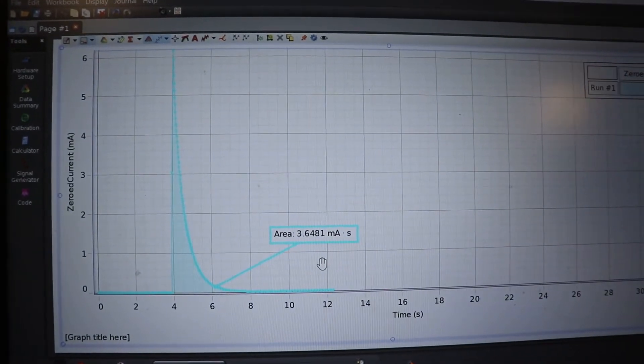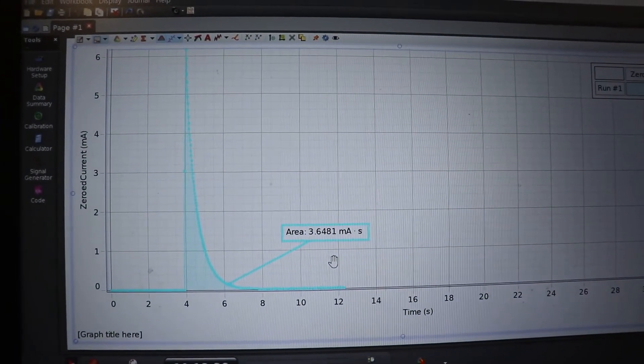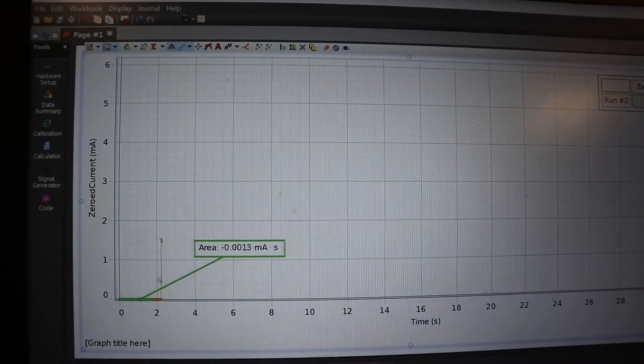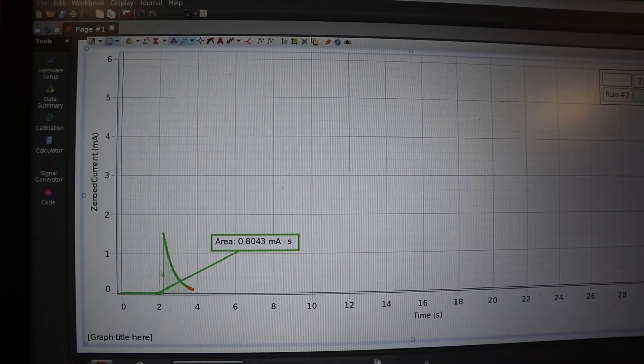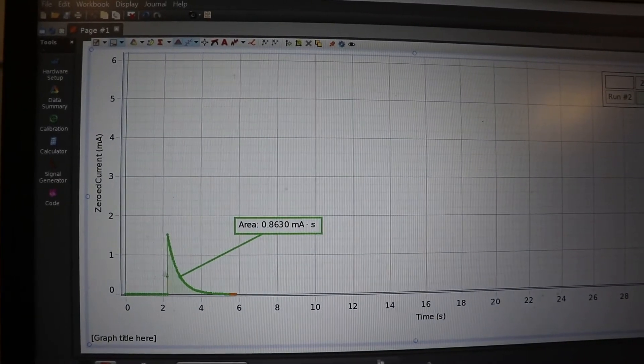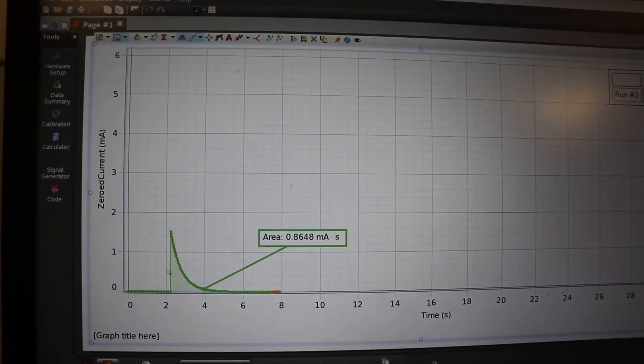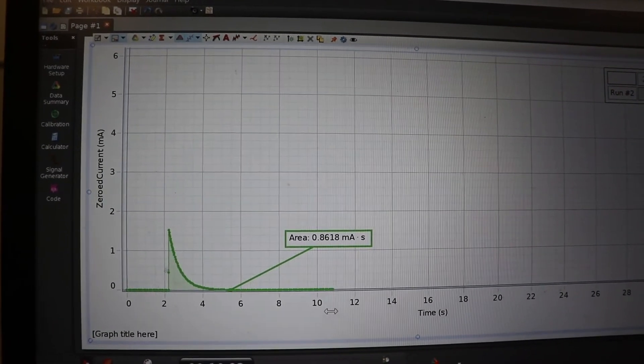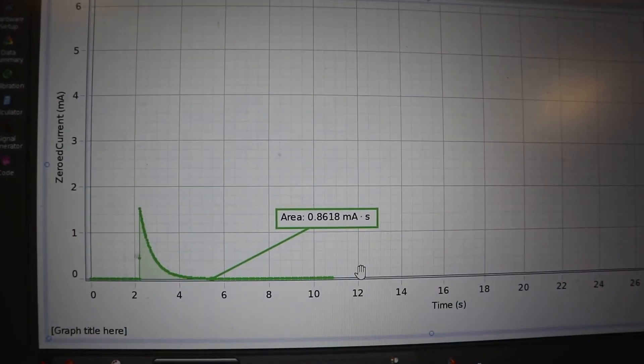So we can go ahead and do it one more time and you'll see—remember it was 3.648 milliamp seconds? All right, so let's go ahead, we'll do it one more time. So I'm going to push record and close the switch, and you can see hardly any current at all because the voltage is so low. Open it up, we're all done, and the area is 0.862.